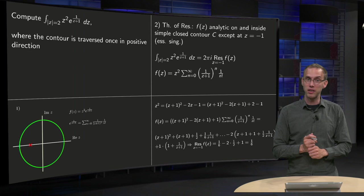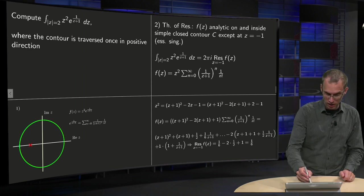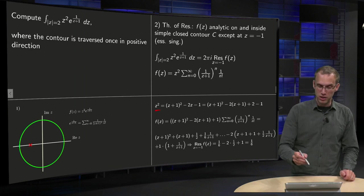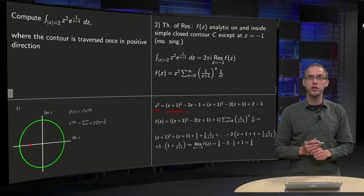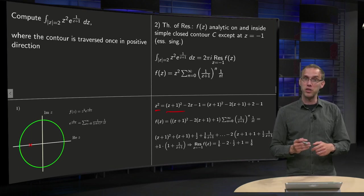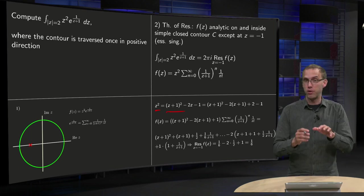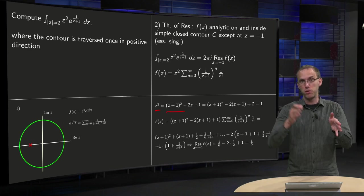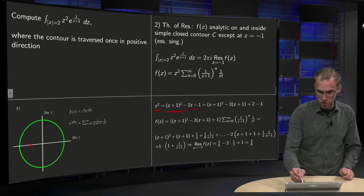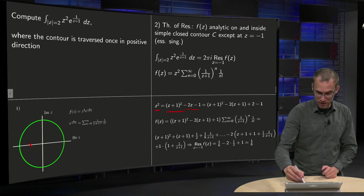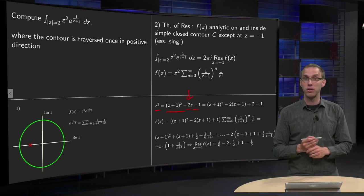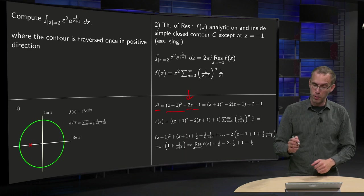OK let's do that. So we have to rewrite our z squared. You can write z squared as z plus 1 squared of course, but then you have too many terms, then you have to subtract. If you expand, you would get z squared plus 2z plus 1, so you have to subtract those. But then you are left with the z, which is also not in terms of the power of z plus 1.